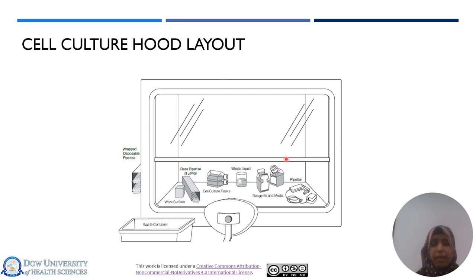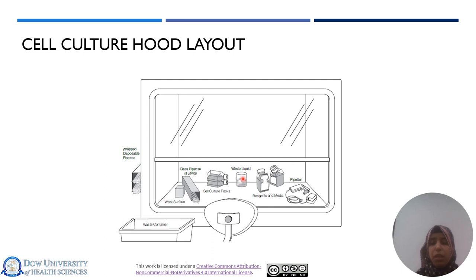This is a generalized layout of a cell culture hood, showing the basic items required: a pipettor, micro pipettes, reagent bottles containing required media, cell culture flasks, glass or disposable pipettes, and waste containers — both a liquid waste container and a solid waste container.